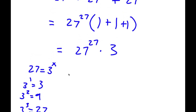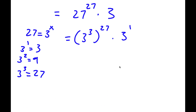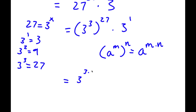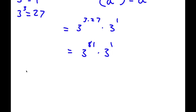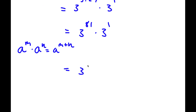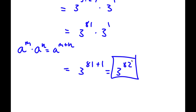So I have 3 to the power of 3 to the power of 27, times 3 to the power of 1. Using the rule a to the power of m to the power of n equals a to the power of m times n, I get 3 to the power of 3 times 27, times 3 to the power of 1. 3 times 27 is 81, so I have 3 to the power of 81 times 3 to the power of 1. Now using a to the power of m times a to the power of n equals a to the power of m plus n, I get 3 to the power of 81 plus 1, which is 3 to the power of 82. So this is my answer.